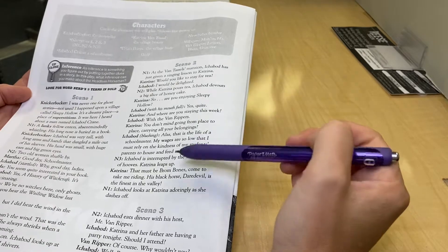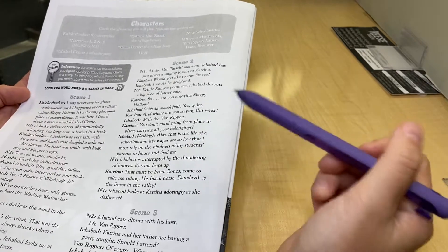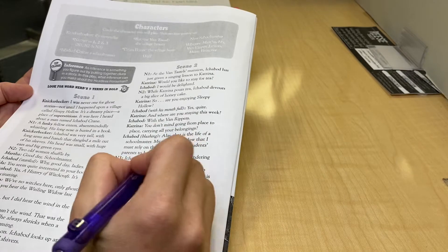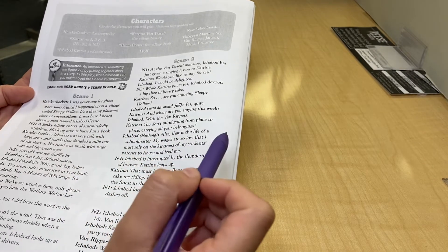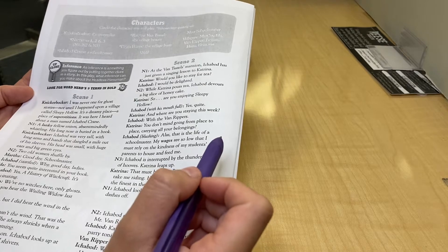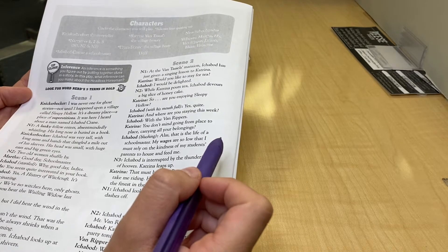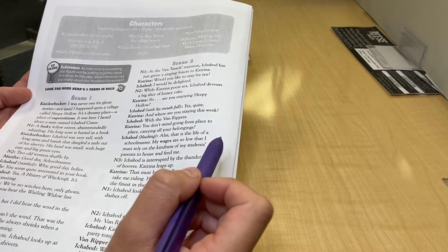I'm going to kind of skip around and not read the entire thing, because I know you're about to do that on your own. But if I go here to what Ichabod says, he says, 'Alas, that is the life of a schoolmaster. My wages are so low that I must rely on the kindness of my students' parents to house and feed me.'